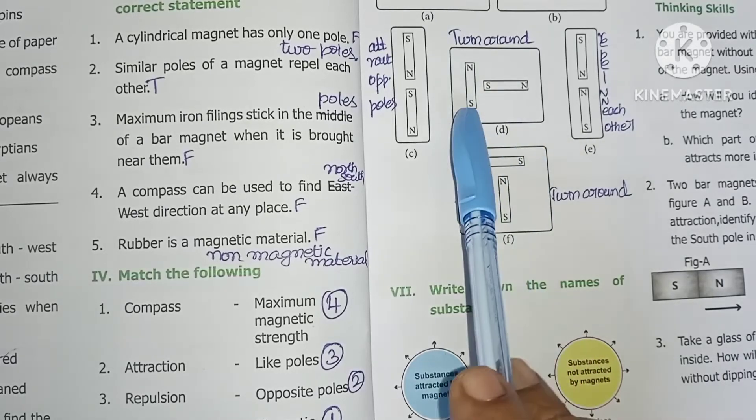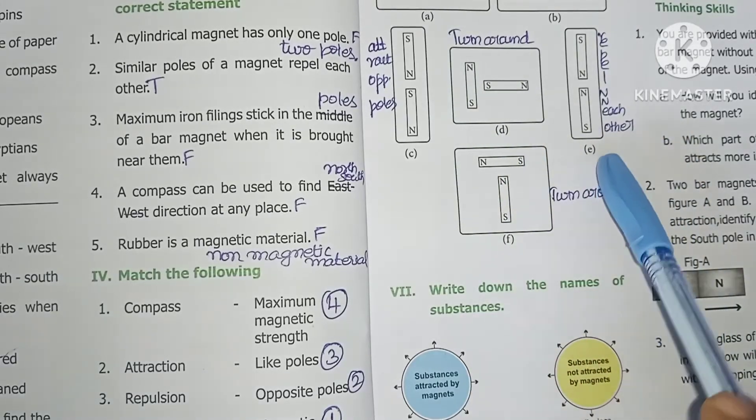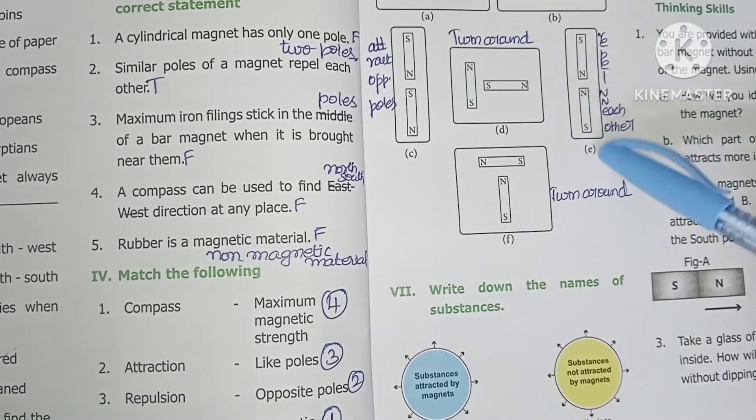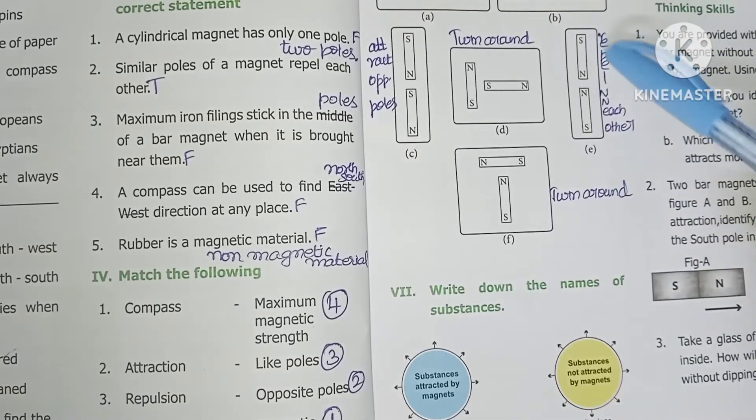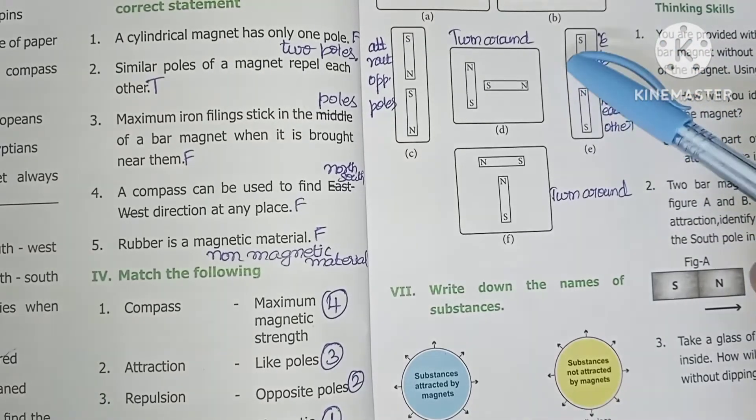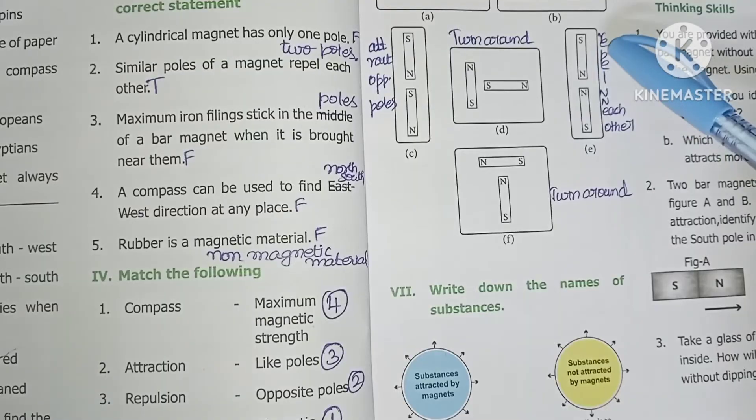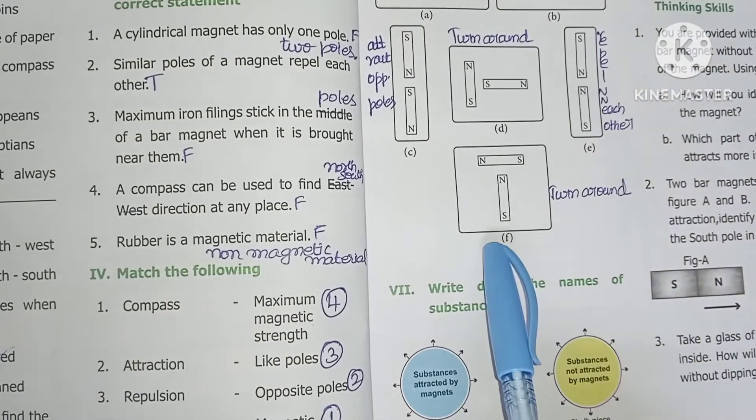What is this? S-N, N-S. N and N in the same direction repel each other. F shows turnaround.